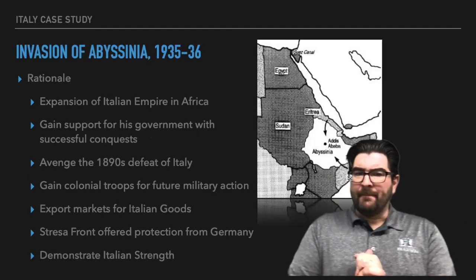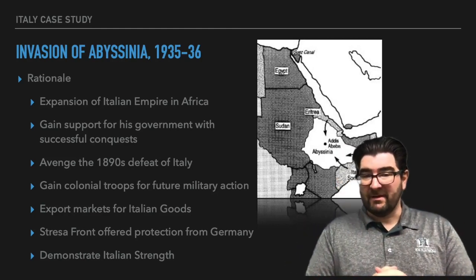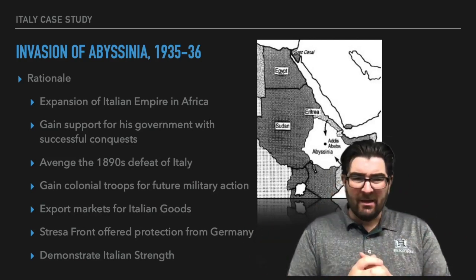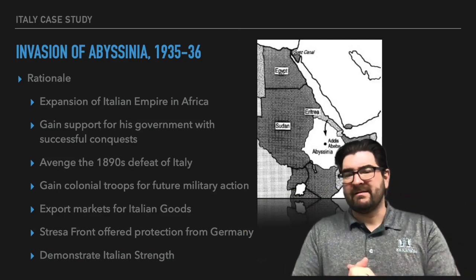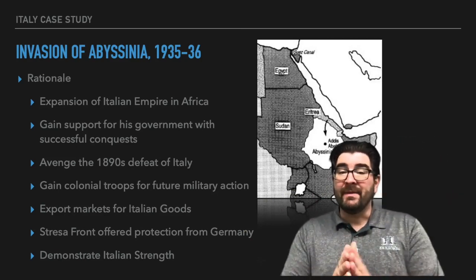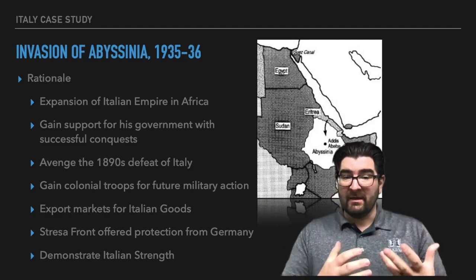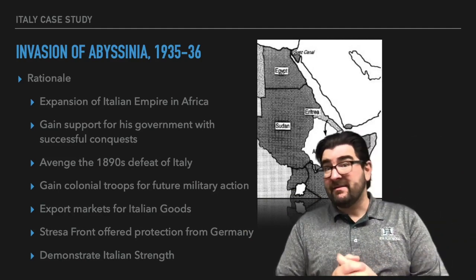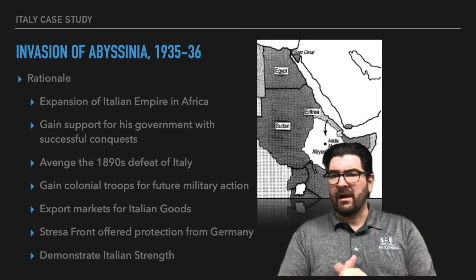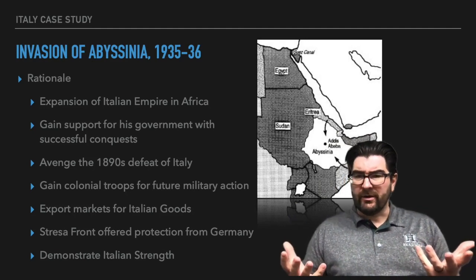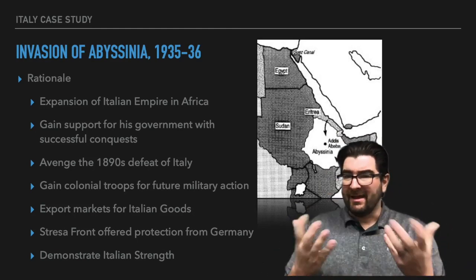This is going to quickly fall apart, though, as Italy is going to look to expand in Africa. In 1935, we will see the Italian invasion of Abyssinia — also known as Ethiopia — which is nestled in between territories in Africa that Italy already controls in Eritrea and Italian Somaliland. Italy obviously wants to unite these East African holdings. Mussolini hopes to gain support for his government within Italy after having successful conquests, and he wants to avenge a defeat that the Italian Empire experienced back in the 1890s — a battle known as the Battle of Adawa. He's also hoping to gain colonial troops, as the British and French had used troops from their colonies to support their World War I effort.